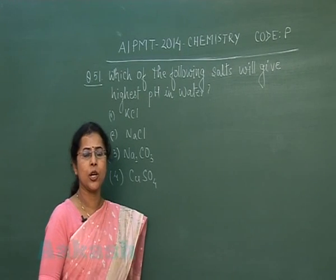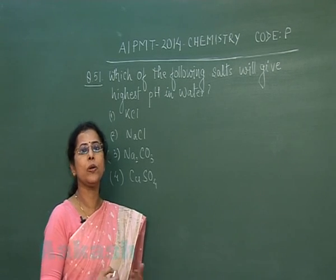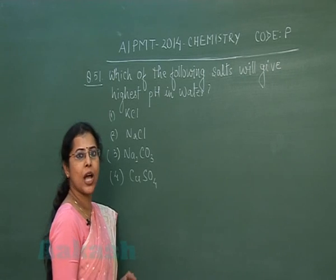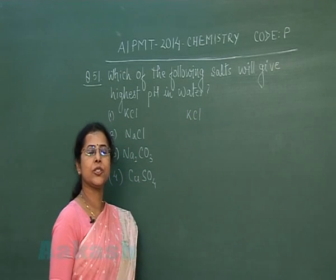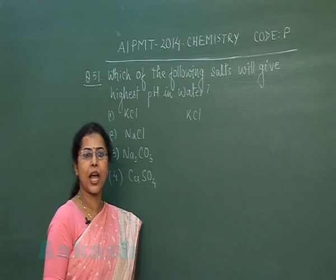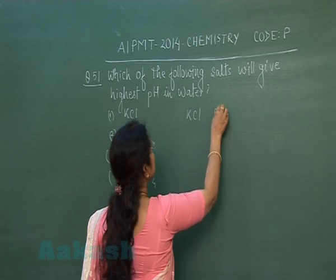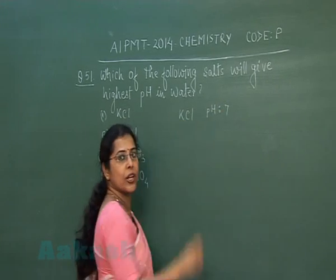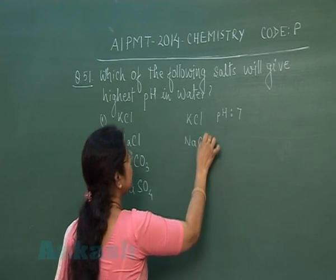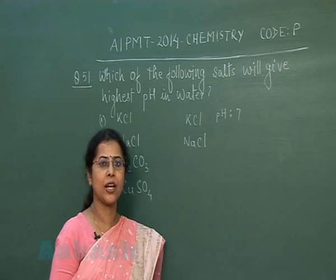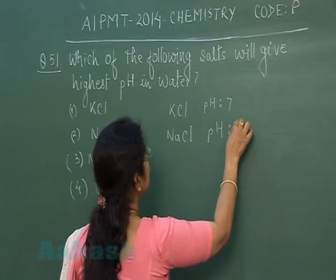When a salt is dissolved in water, the nature of the solution — or the pH — depends upon hydrolysis. KCl is a salt of a strong acid and a strong base, which does not hydrolyze, so the solution remains neutral with pH 7. Similarly, NaCl is also a salt of a strong acid and a strong base, so its aqueous solution is also neutral with pH 7.